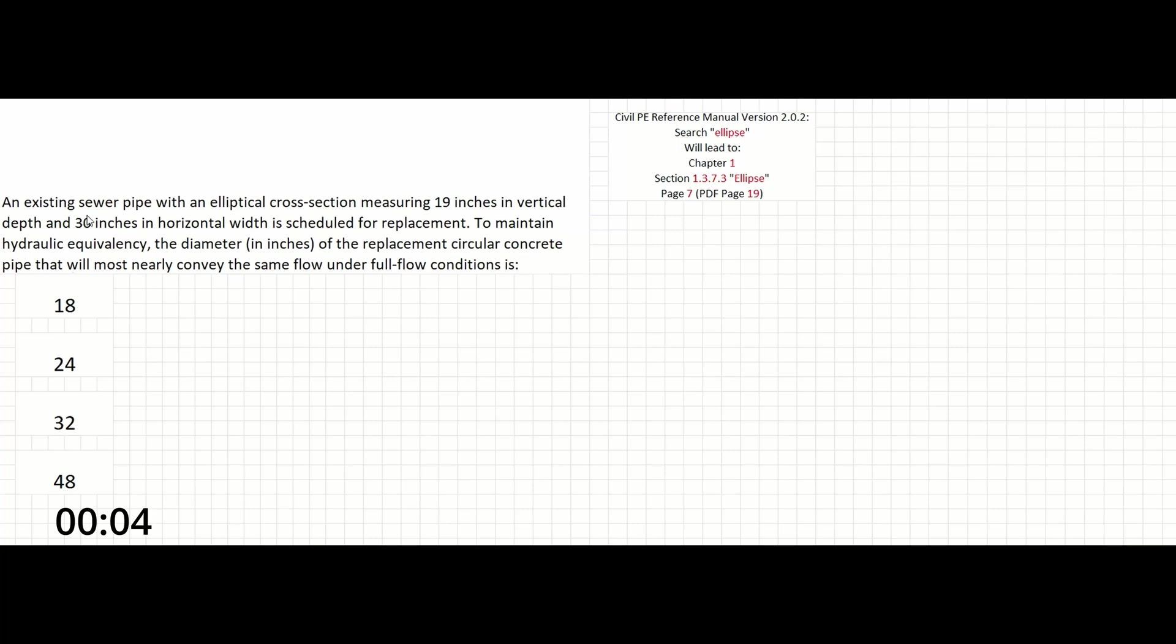In this problem, an existing sewer pipe with an elliptical cross-section measuring 19 inches in vertical depth by 30 inches in horizontal width is scheduled for replacement.